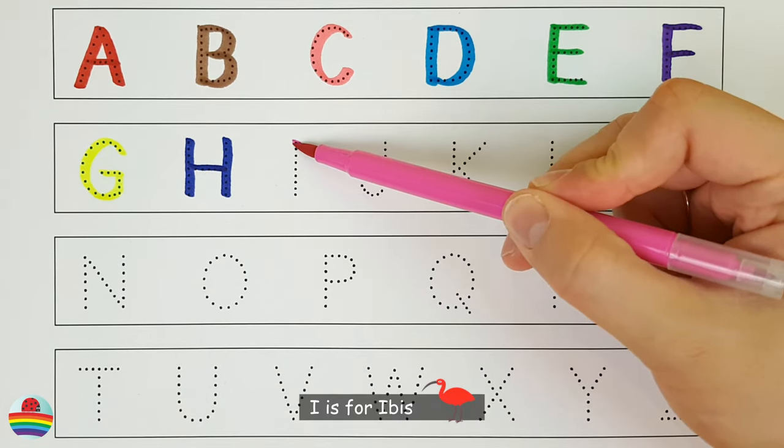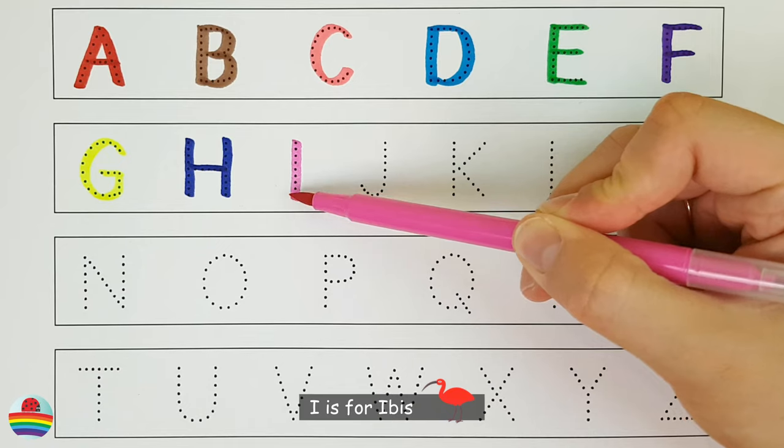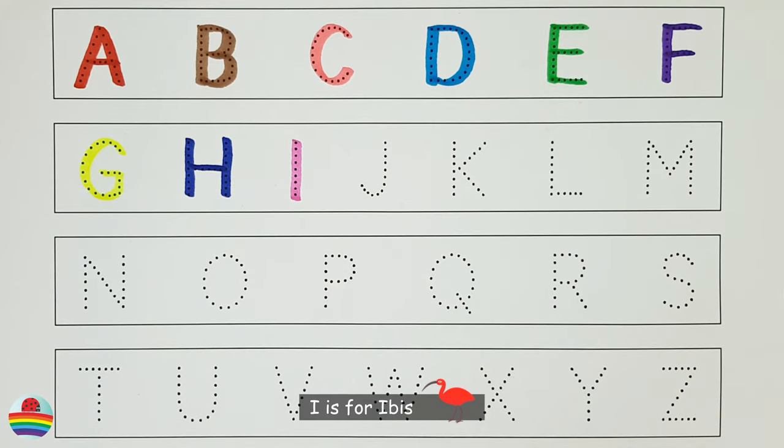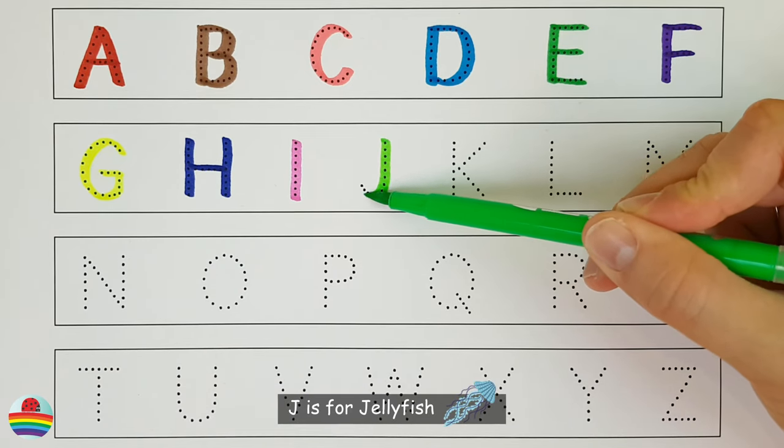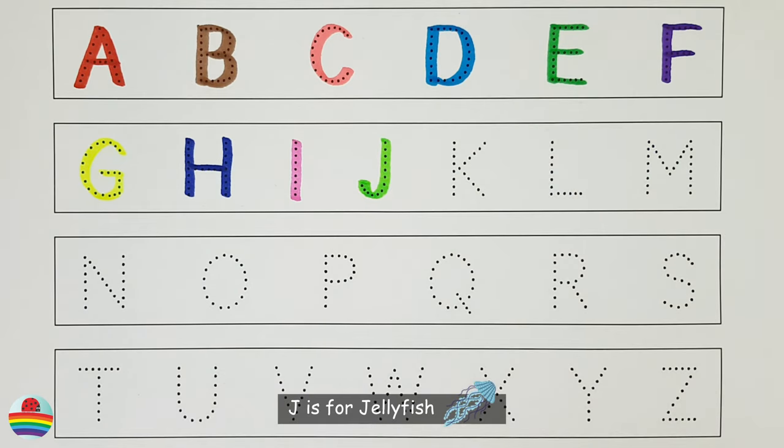I. I is for ibis. J. J is for jellyfish.